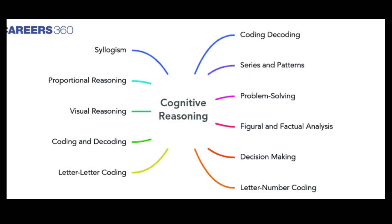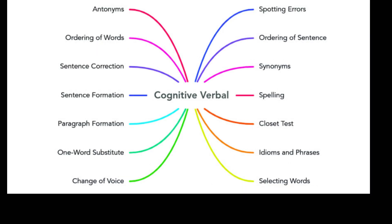For reasoning, you need to learn visual reasoning, decision making, problem solving, series and pattern, coding-decoding, and letter coding. For verbal, you need to cover grammatical error rectification, sentence formation, paragraph formation, one-word substitution, change of voice, selecting words, spelling mistakes, and ordering of words.